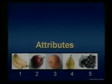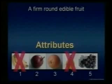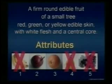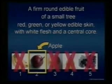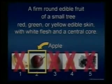Let's take an example using fruit. Number one: it has to be a firm, round, edible fruit — that leaves out bananas and pears. Another attribute: it comes from a small tree — that leaves out grapes. Then: red, green, or yellow, edible skin with white flesh and a central core — that leaves out the orange. When you look at all those attributes together, they clearly define one and only one type of fruit: the apple. Leave any one of those attributes out and we don't have a clear distinction.